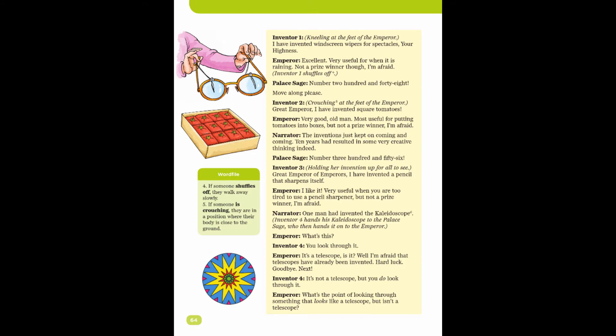Narrator: The inventions just kept on coming and coming. Ten years had resulted in some very creative thinking indeed. Palace Sage: Number 356. Inventor Three, holding out inventions up for all to see: Great emperor of emperors, I have invented a pencil that sharpens itself. Emperor: I like it. Very useful when you are too tired to use a pencil sharpener. But not a prize winner, I am afraid.